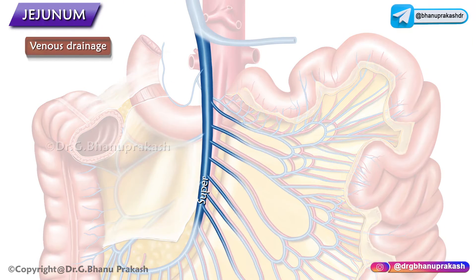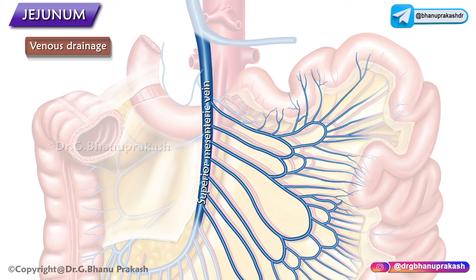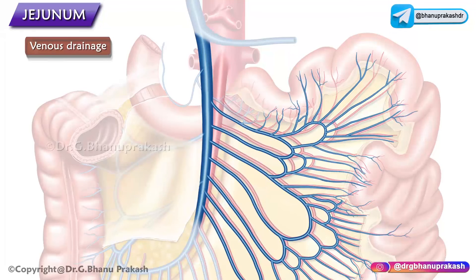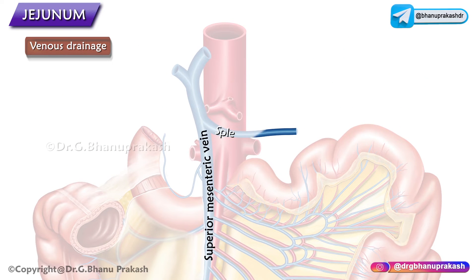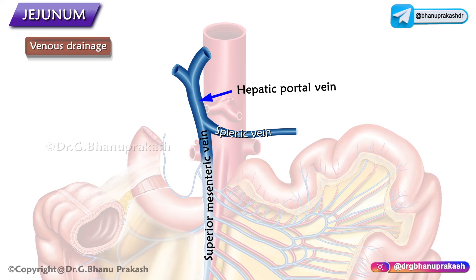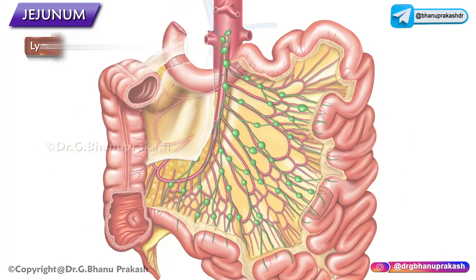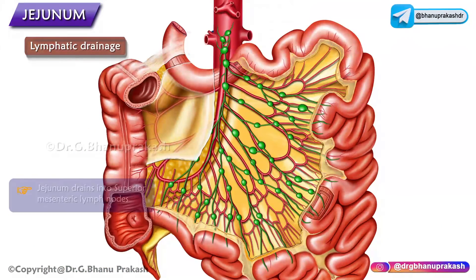The superior mesenteric vein drains the jejunum. In the root of the mesentery, the superior mesenteric vein lies anterior and to the right of the superior mesenteric artery. The superior mesenteric vein unites with the splenic vein to form the hepatic portal vein, posterior to the neck of the pancreas.